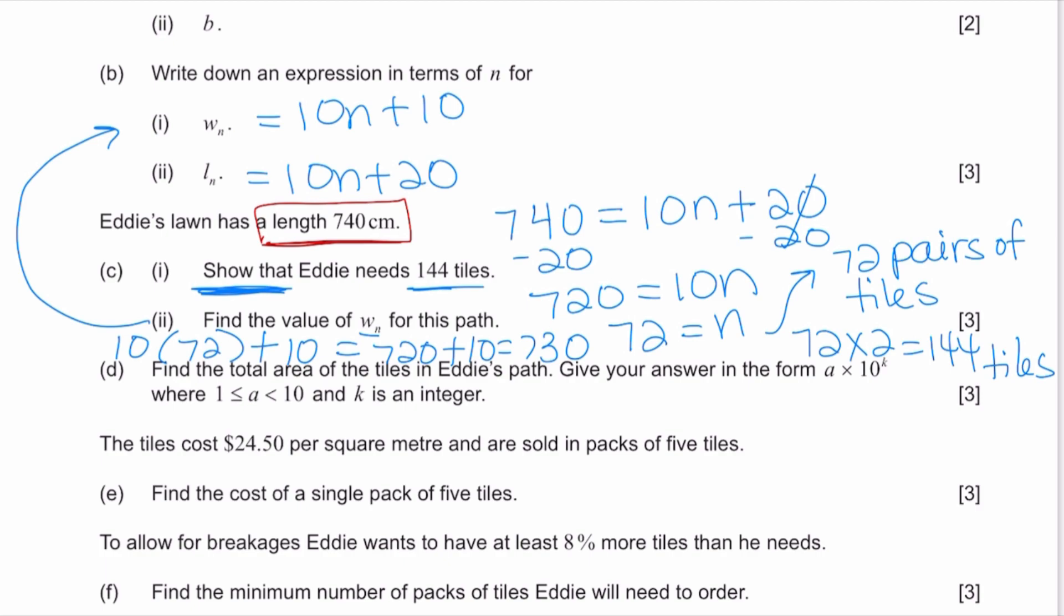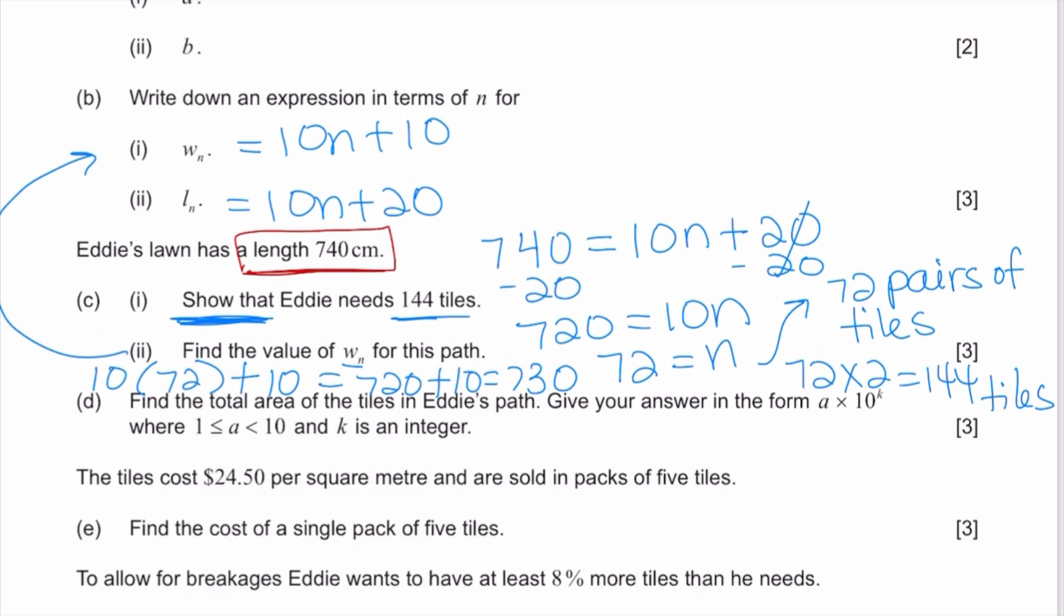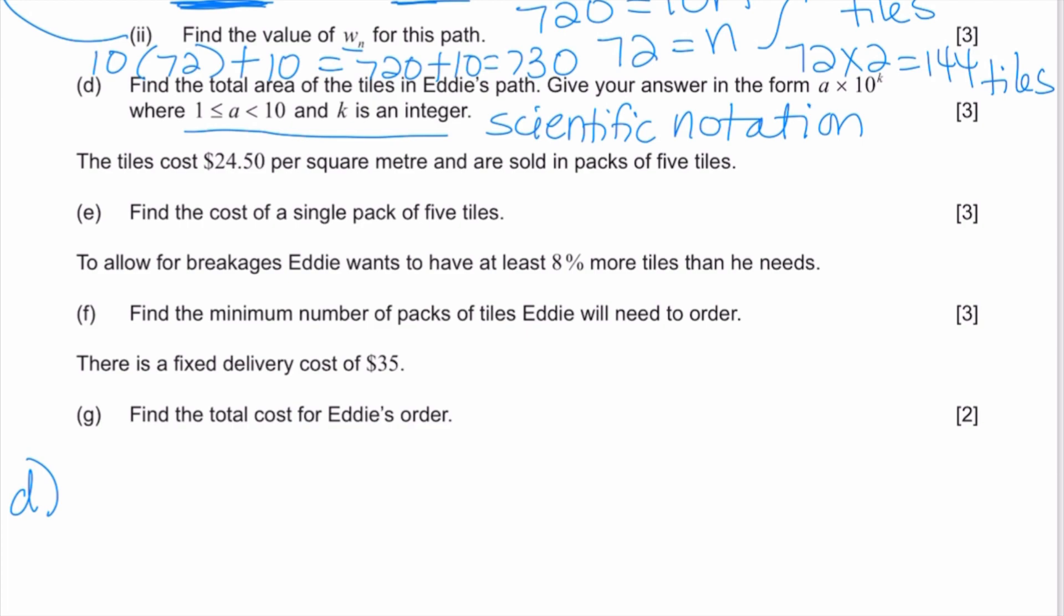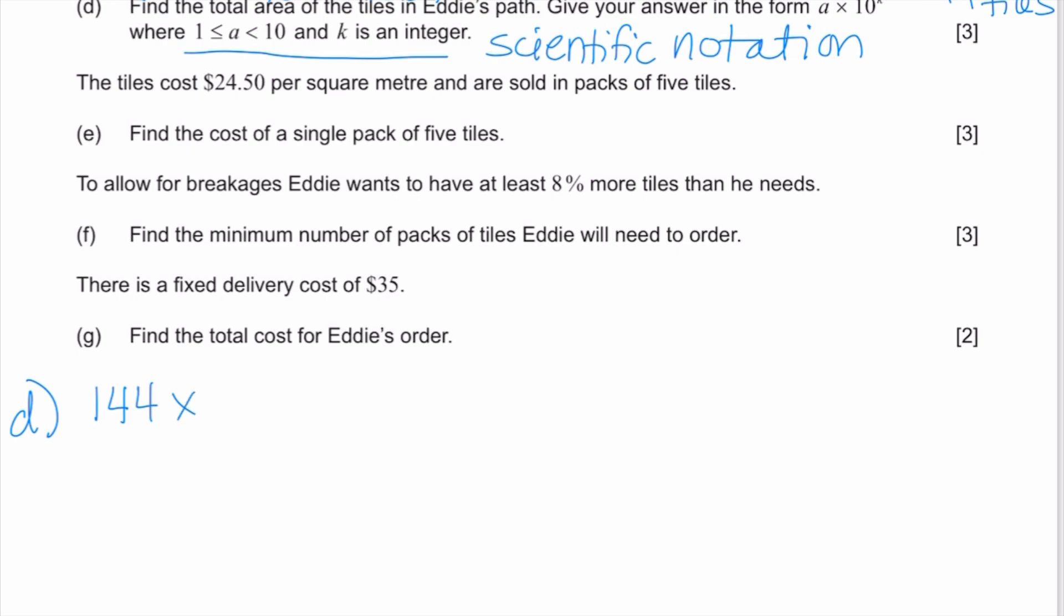In part d, it says to find the total area of the tiles in Eddie's path. Give your answer in the form a times 10 to the k, where 1 is less than or equal to a less than 10 and k is an integer. What this tells you is that they want you to write your answer in scientific notation. For part d, we know that he needs 144 tiles, and this is something you can answer even if you did not figure out how to show it. So if I need 144 tiles times the area of each tile, which is 10 by 20 centimeters, this gives me a total of 28,800 square centimeters. If you want to write this in scientific notation, the decimal point, since it doesn't have one, is at the end, and you go back one, two, three, four spaces. In scientific notation, you can only have one number in front of the decimal point that is not zero. So only one non-zero digit in front of the decimal point.